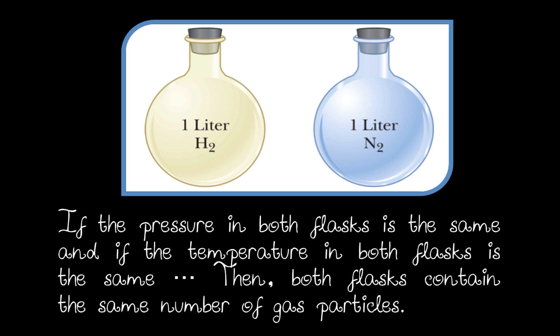For example, these two flasks, 1 liter each. The one on the left contains 1 liter of hydrogen. The flask on the right contains 1 liter of nitrogen. According to Avogadro,